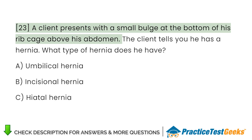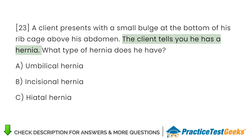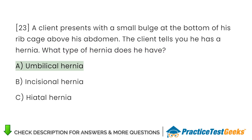A client presents with a small bulge at the bottom of his ribcage above his abdomen. The client tells you he has a hernia. What type of hernia does he have? A. Umbilical hernia. B. Incisional hernia.